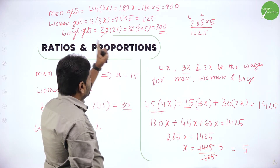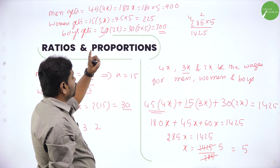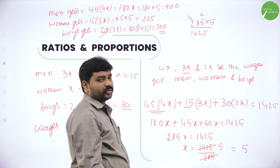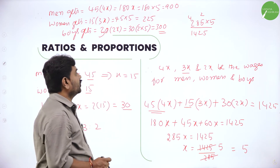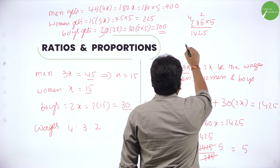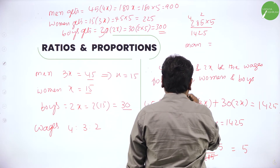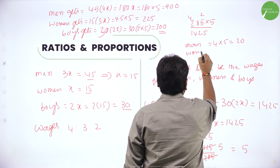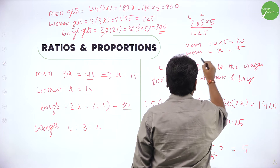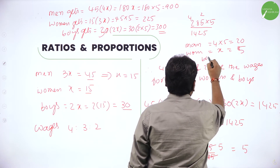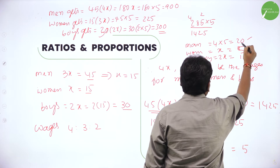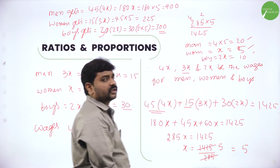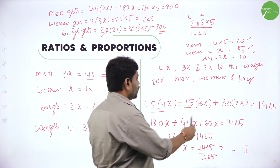All the men put together get ₹900. But per man, they get 4x — that is 4 into 5 is ₹20 per man. One woman gets 1x — that is ₹5 per woman. One boy gets 2x — that is 2 into 5 is ₹10 per boy. So per man ₹20, per woman ₹5, per boy ₹10.